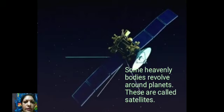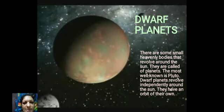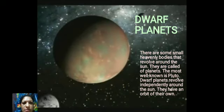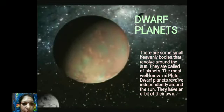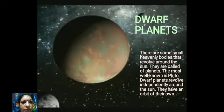Some heavenly bodies revolve around the planets and these are called satellites. There are also some small heavenly bodies that revolve around the Sun independently in their own orbit — these are called dwarf planets. The most well-known dwarf planet is Pluto. Dwarf planets revolve independently around the Sun and have an orbit of their own.